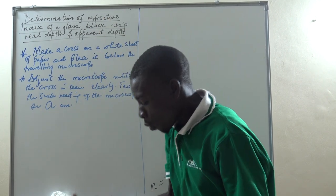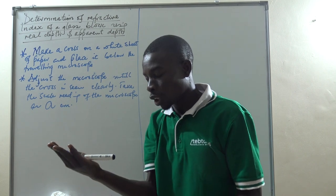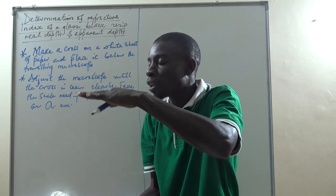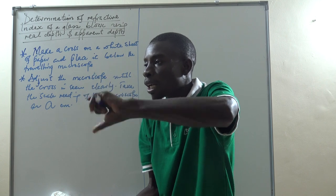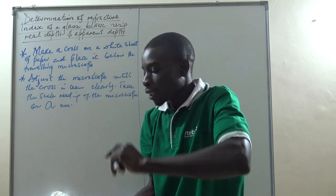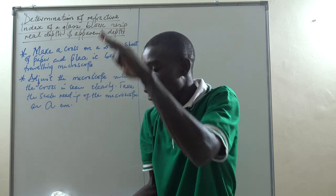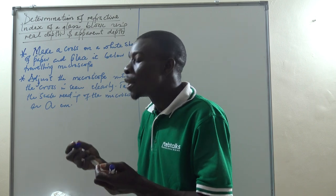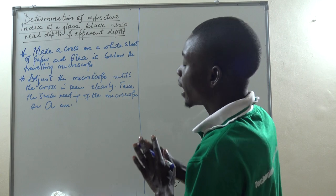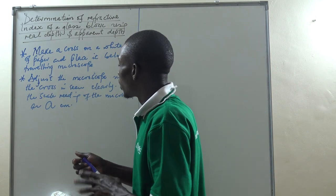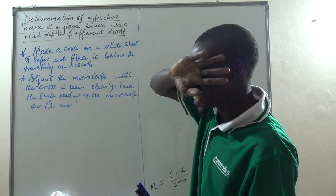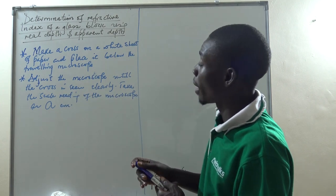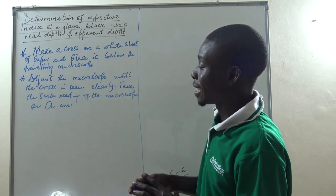So when the sheet of paper with the cross is down and the microscope is up, focus it up and down until you see it. You can make some adjustment until you now see the cross very well. Then measure and record the distance from the scale of the microscope — that vertical distance — as A.